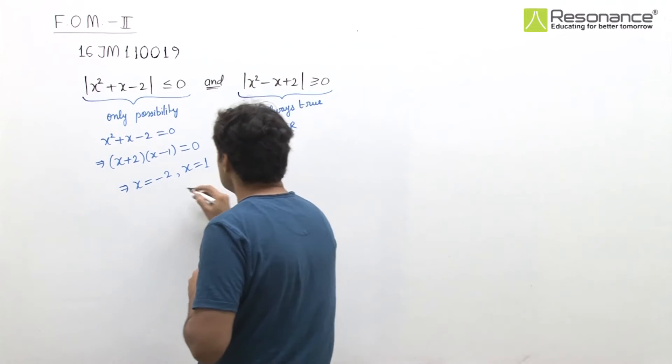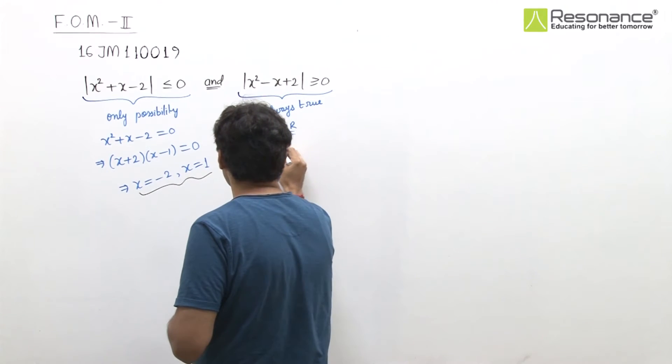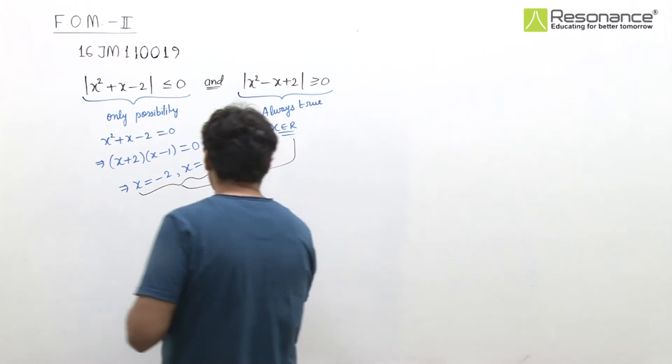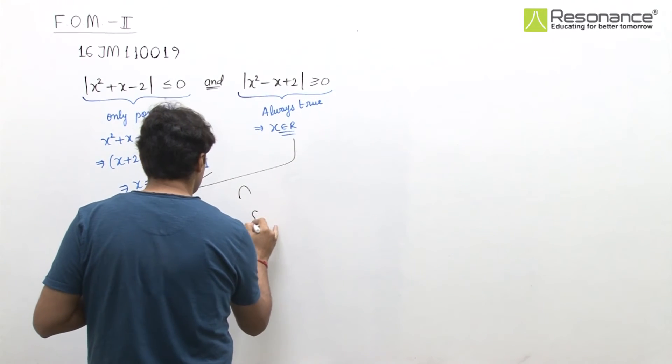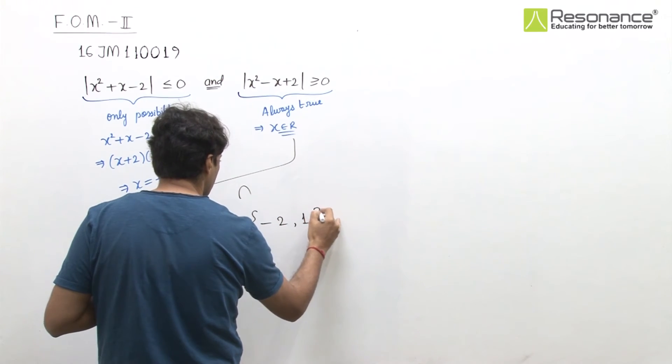So, yahan se ye 2 values aayi hai, or yahan se x belongs to R. Intersection ki bhi 2 values aayi. That means, solution set hai that is minus 2 comma 1.